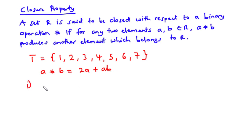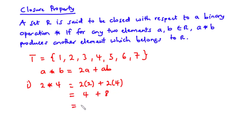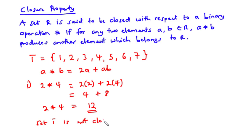However, if the third value is not found in the set, it means that set T is not closed under the binary operation star. So let's evaluate 2 star 4. Using the rule, with A equal to 2 and B equal to 4, we have 2 times 2 plus 2 times 4. 2 times 2 is 4, and 2 times 4 is 8. So 4 plus 8 is 12. Now since 12 is not a member of set T, it follows that set T is not closed under the binary operation star.